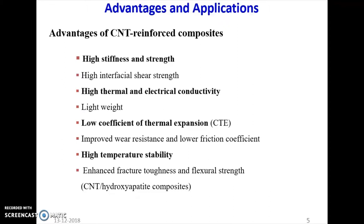Why is the coefficient of thermal expansion important? If there is a change in temperature, there is a possibility of expansion and contraction of the component. In aerospace, it may go from some negative to some positive temperature — so there is a huge variation of temperature. Due to the change in temperature, it will expand and contract, so there is some possibility of failure of the component. If the coefficient of thermal expansion is low, then the possibility of failure is very less. Carbon nanotube reinforced composite also has this property, along with improved fire resistance, lower friction coefficient, high thermal stability, enhanced fracture toughness, and flexural strength.